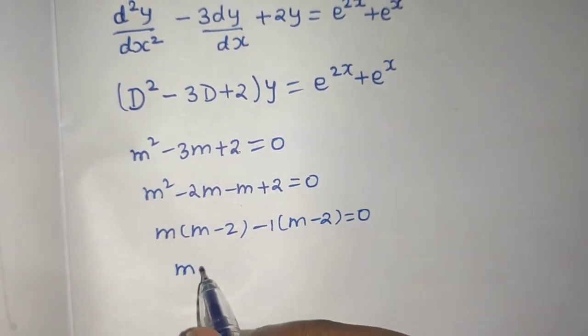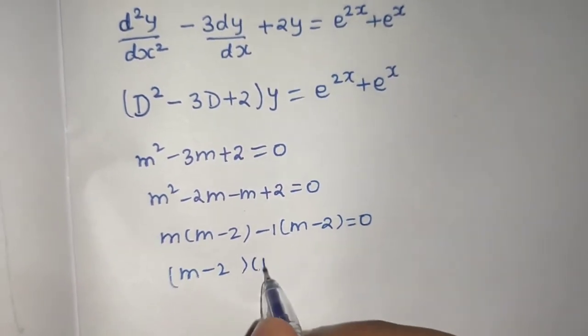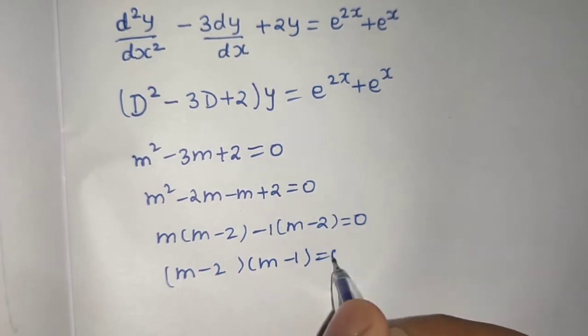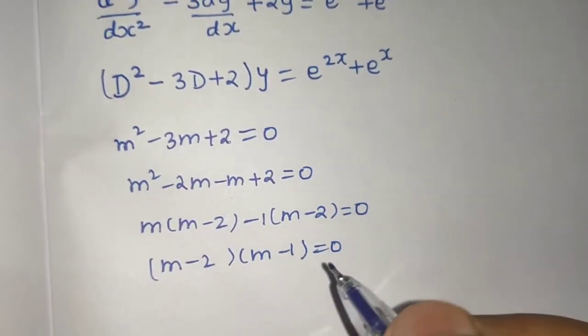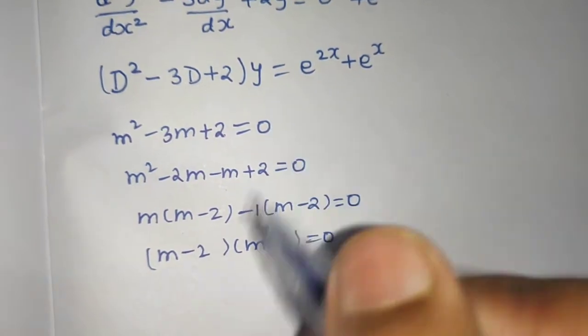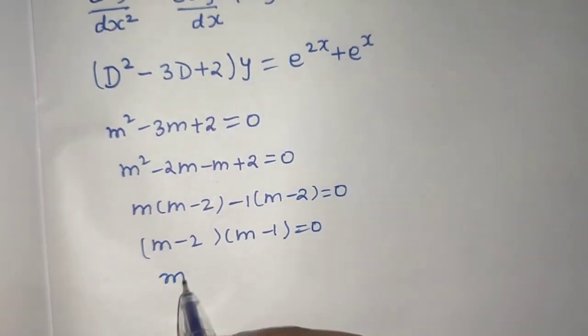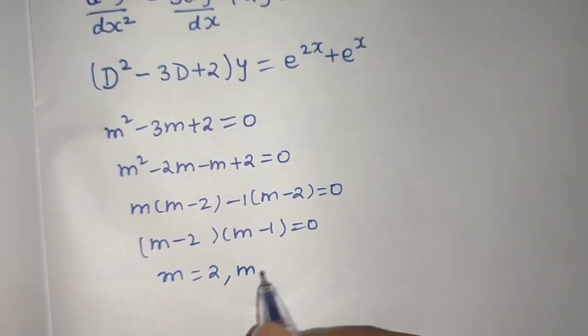From here you are getting (m minus 2)(m minus 1) equals 0. So I don't think that you must be doing all these steps. You have directly written the roots m equals 2 and m equals 1.